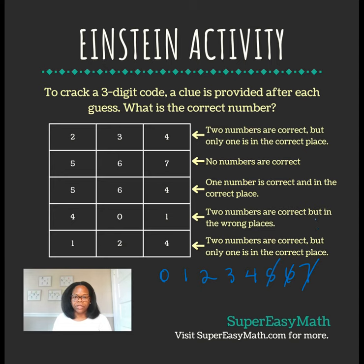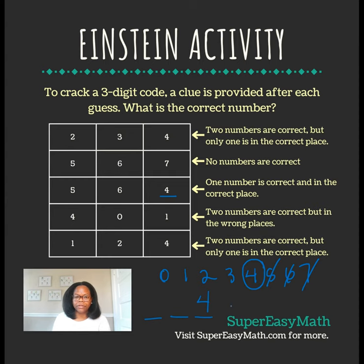We already determined that 5 and 6 are not going to be part of the three-digit code, so we know that the 4 has to be the correct number. I'm going to circle that 4. I'll also list out three spaces to represent the three-digit code and put the 4 as the last digit, because I know it must be there.